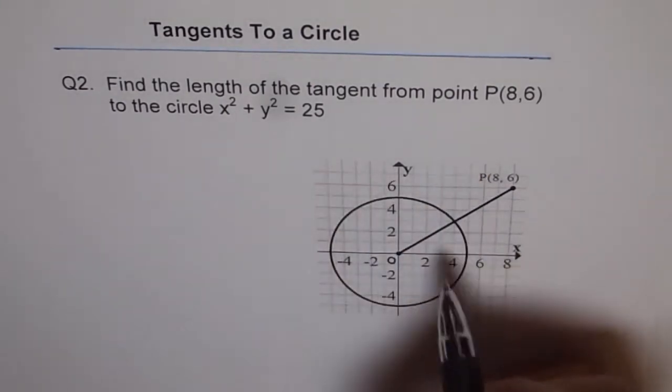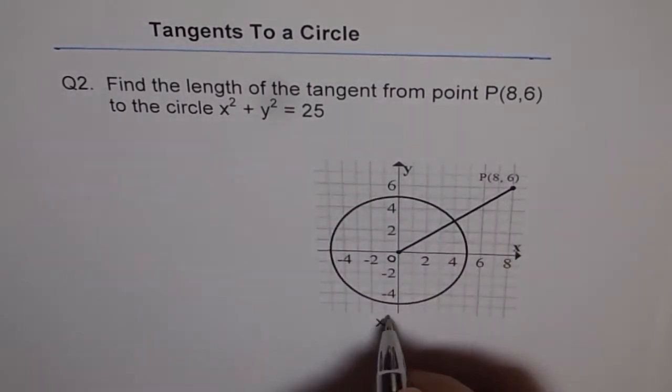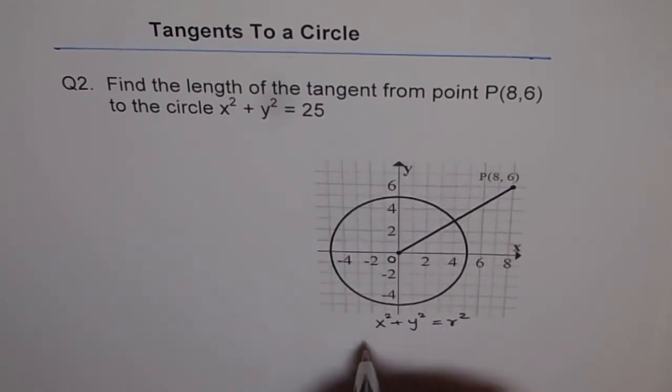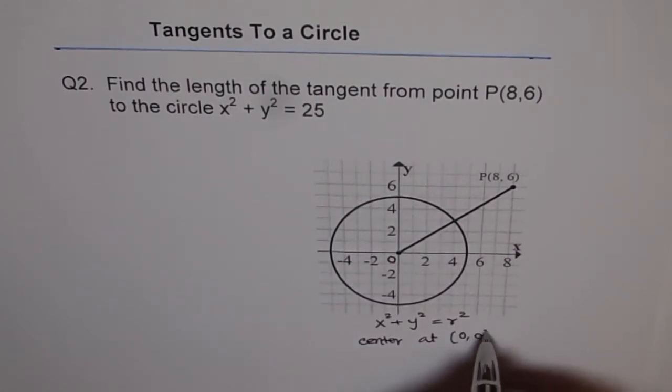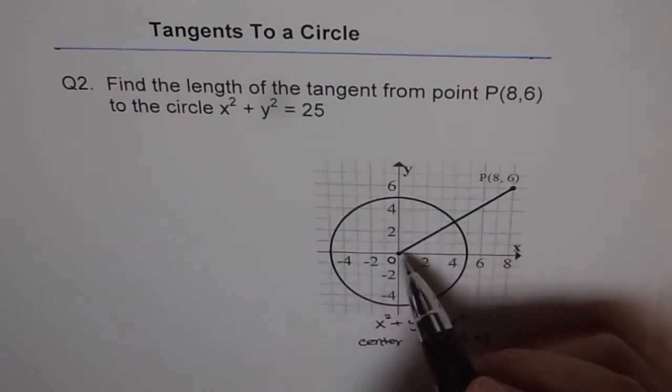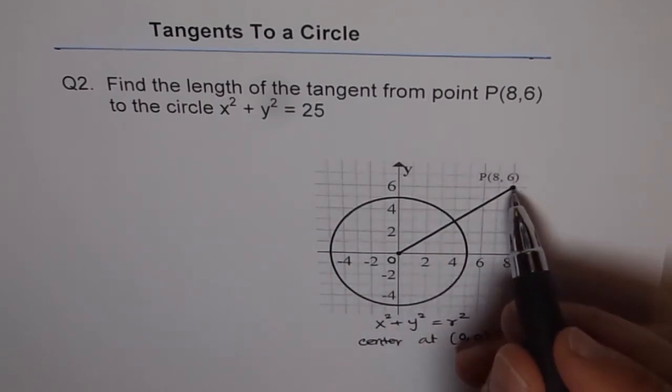So general equation of circle is x² + y² = R². This is a circle with center at origin, right? Center at (0,0). So this point is (0,0) for us, the center of the circle. And the point given to us is P(8,6).